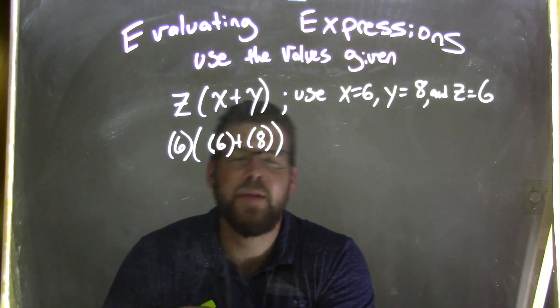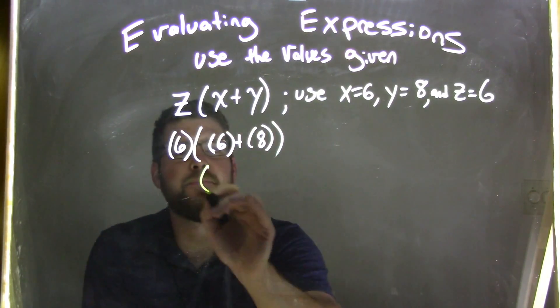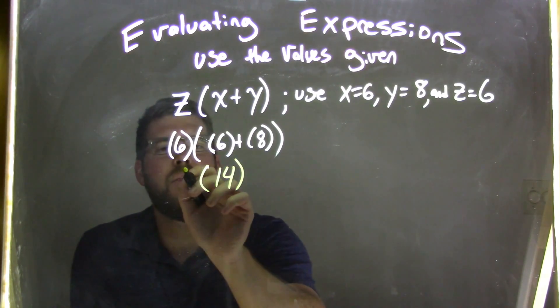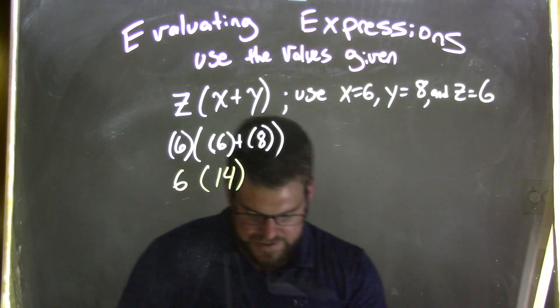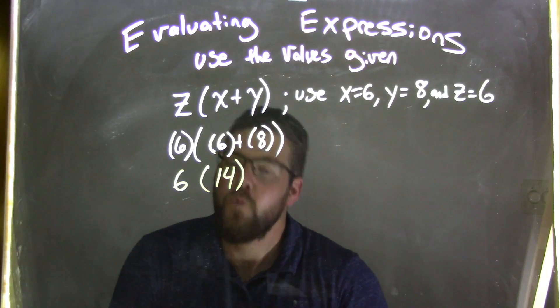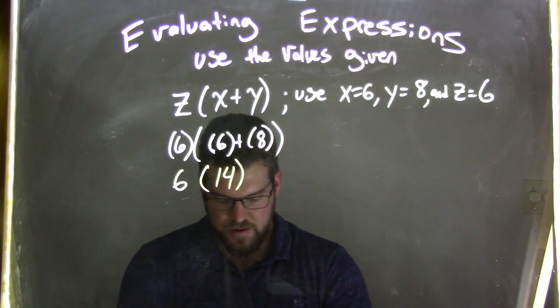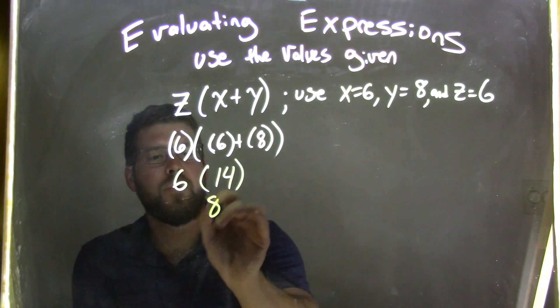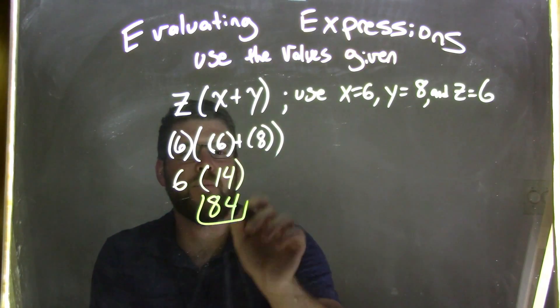So 6 plus 8 comes first, and that comes out to be 14. And then the 6 on the outside. What's 14 times 6? 14 times 6 is 84. 84, my final answer.